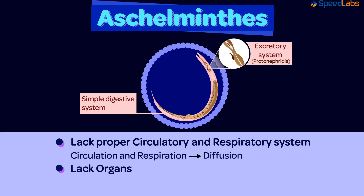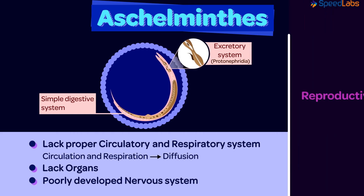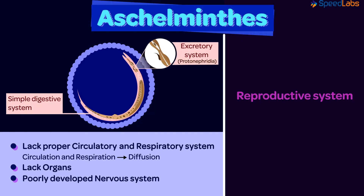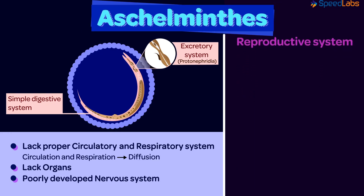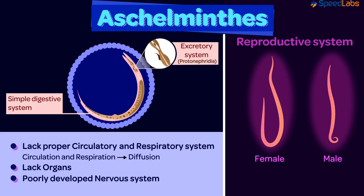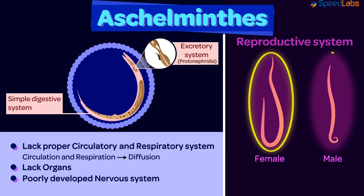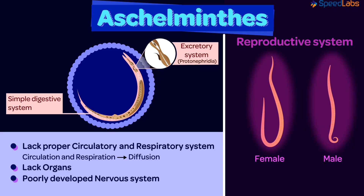No properly developed organs are present for the circulatory and respiratory systems, and the nervous system is poorly developed. Aschelminthes are unisexual organisms, meaning the males and females are separate individuals. Females are usually larger in size compared to the males, which helps us identify the organism. Reproduction occurs sexually and fertilization is also internal.